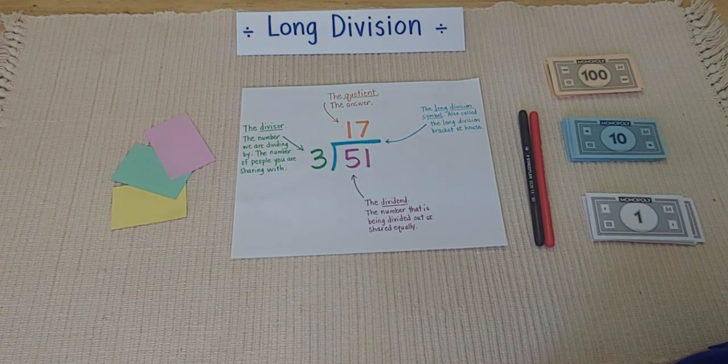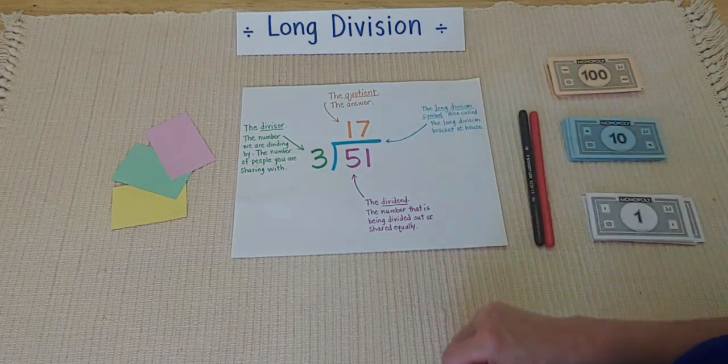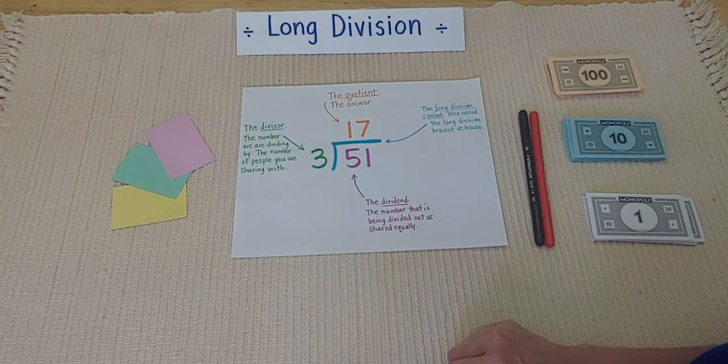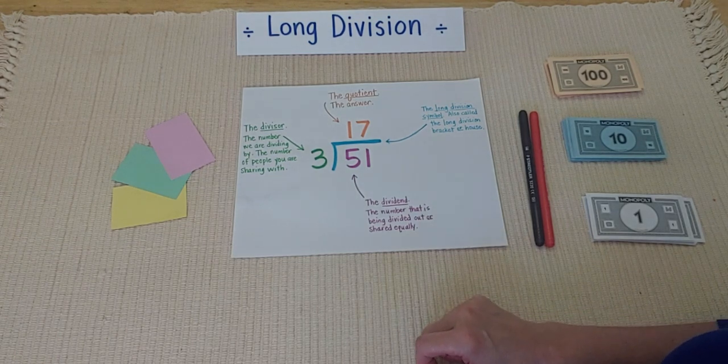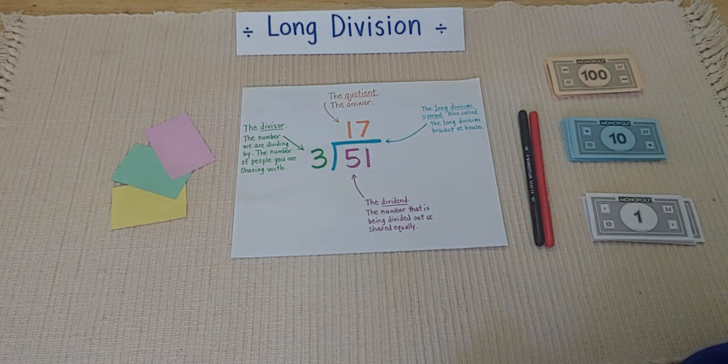And last but not least, this little bar here, that's called the long division symbol. Sometimes you might hear people calling it the long division bracket, or the long division house. Whichever one you choose will work just fine.